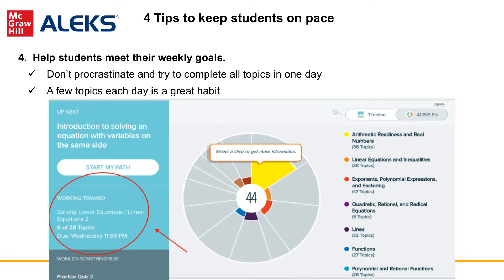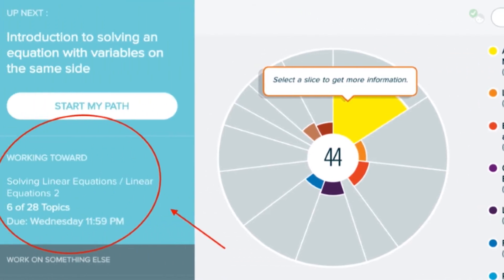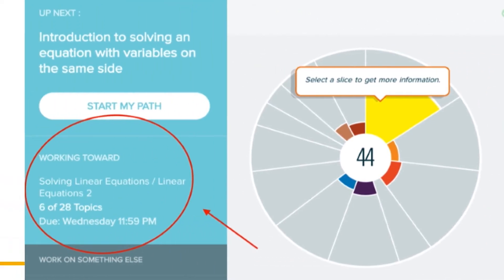Instead, a few topics each day over the course of a week is more realistic and will lead the student to progress effectively. For example, this student has 22 topics to complete by the due date. If the due date is 5 days away, the student should plan to complete 4 or more topics each day to successfully complete the topics.